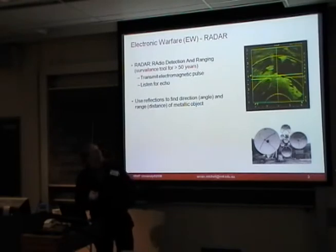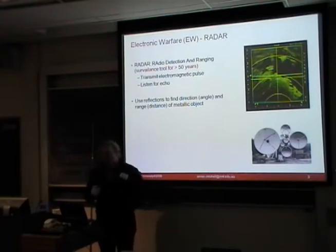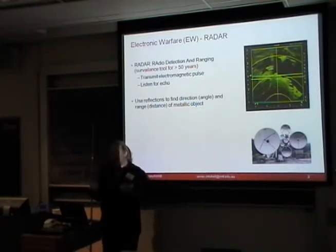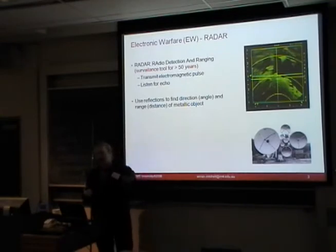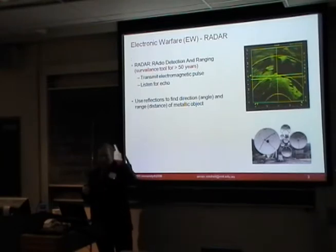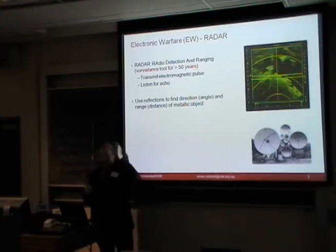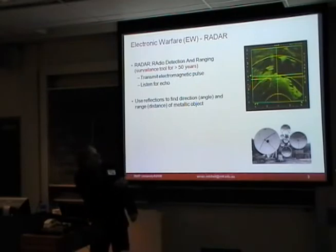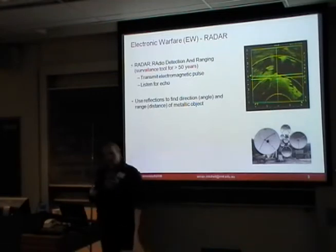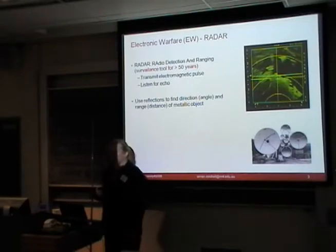Electronic warfare is essentially all about radar — radio detection and ranging. You send an electromagnetic pulse into the environment and listen for when that pulse comes back. By doing fancy signal processing, you can get information about how far away the reflecting object is and which direction it is. With a rotating antenna, you can scan the sky. What you're seeing here is a radar signal from a rotating antenna in cylindrical coordinates. You can also get information like size, shape, velocity, and trajectory of the metallic object.